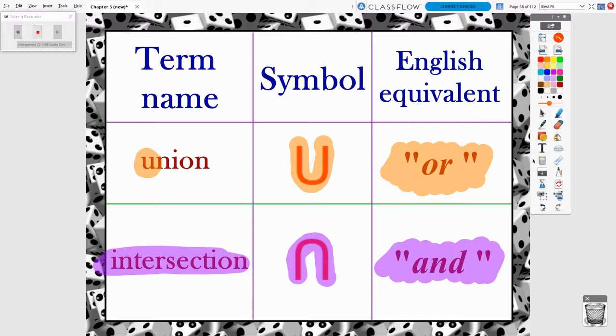So if you see a right side up U, that means OR. When you see an upside down U, you can pretend to just say the word AND.